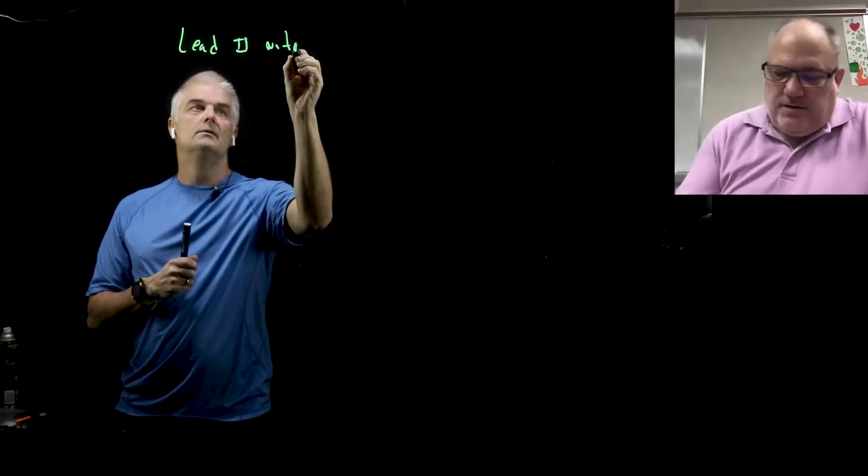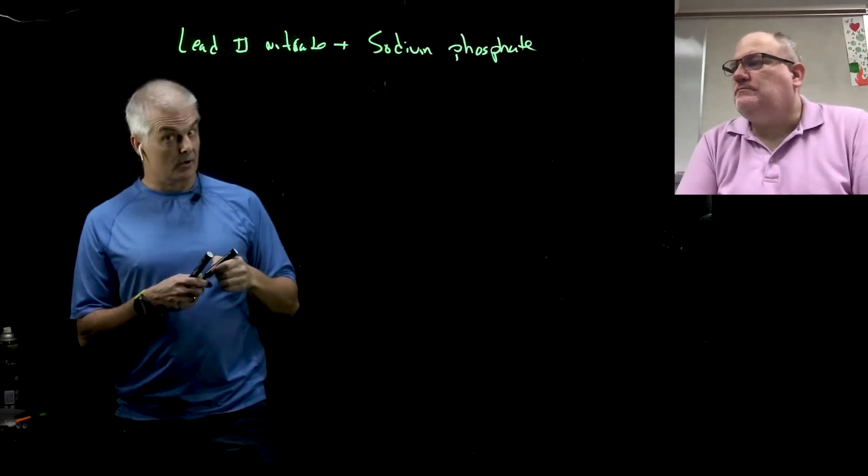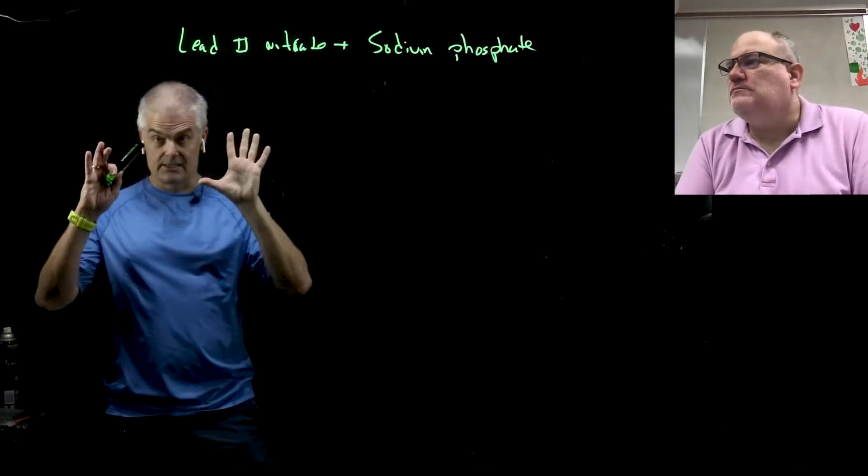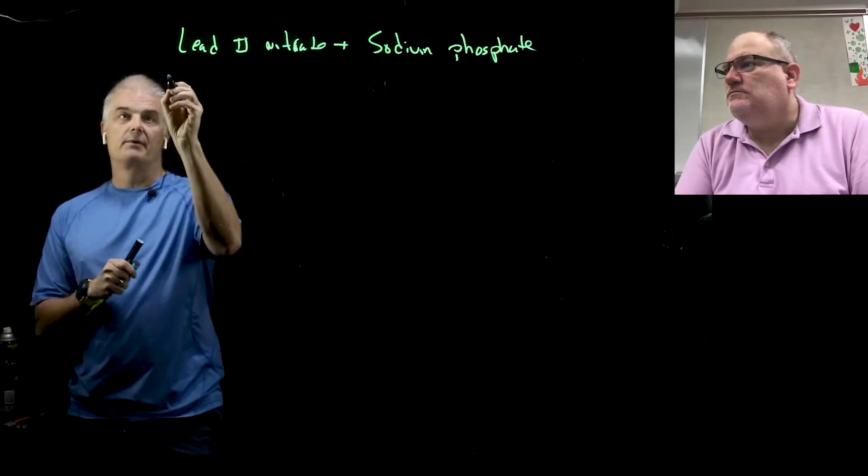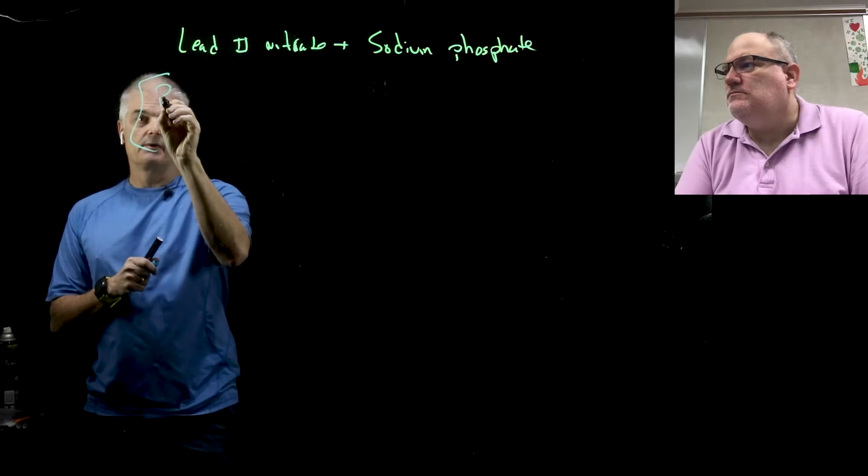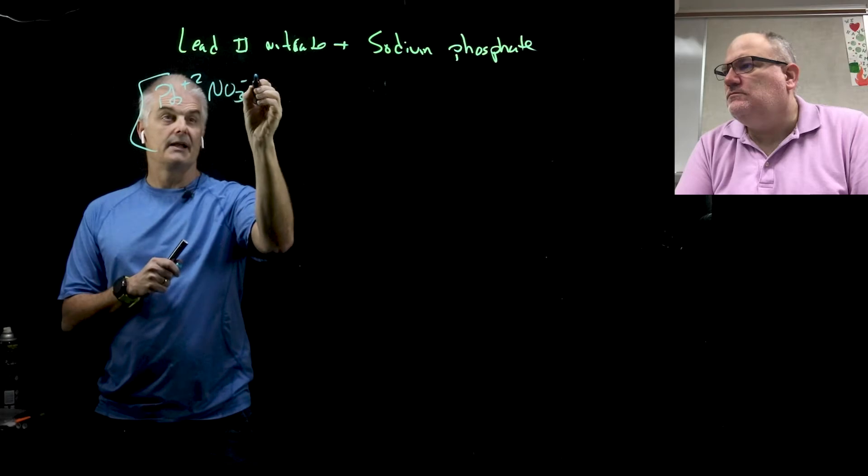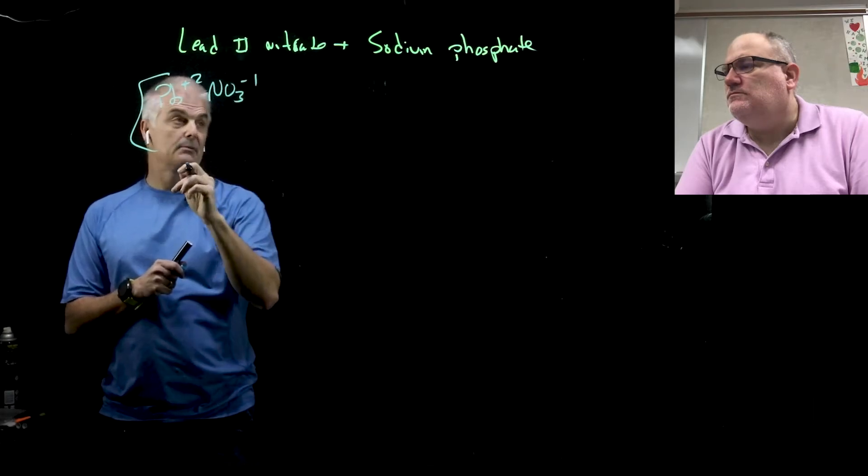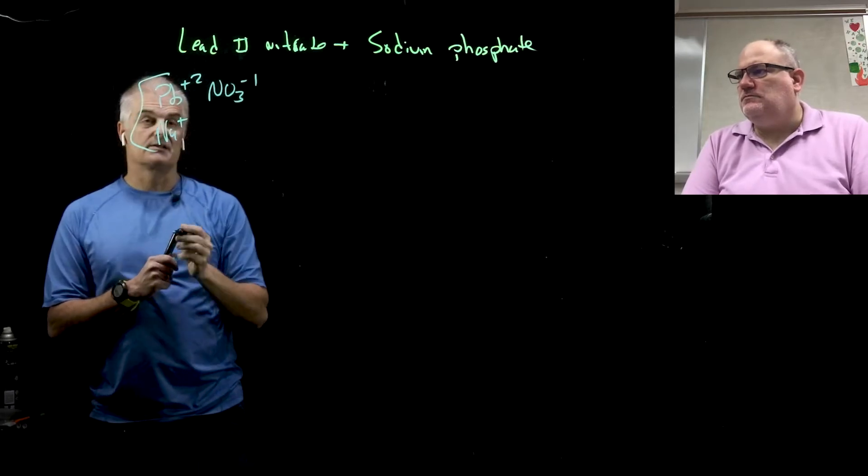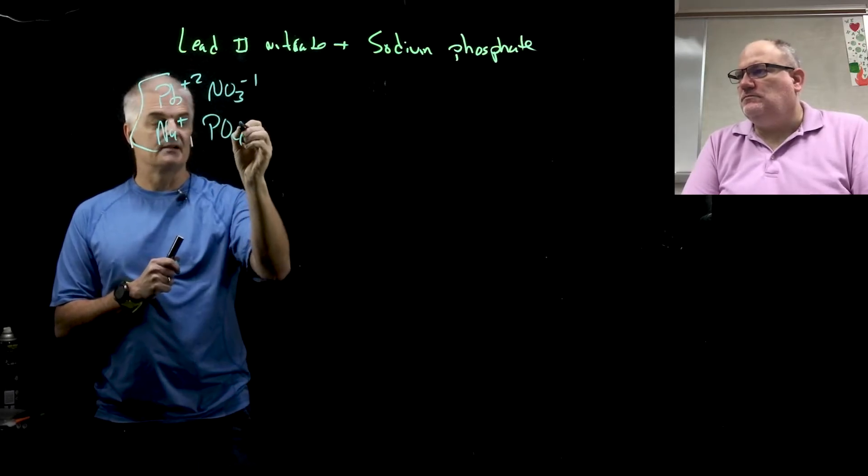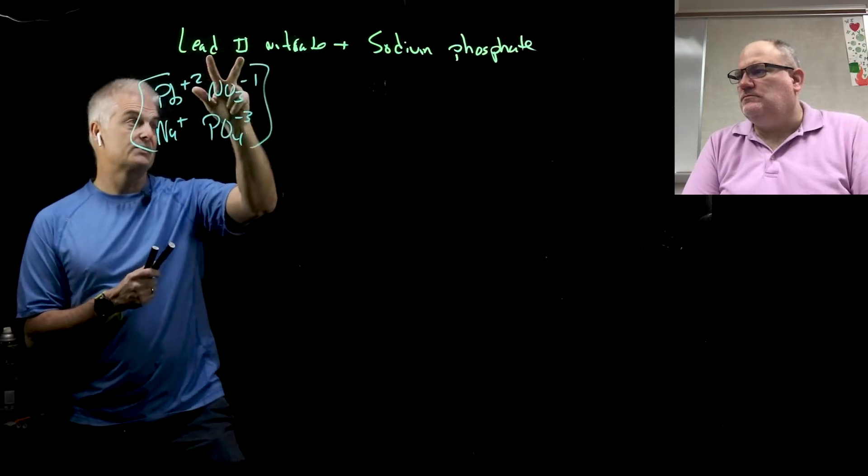What would be another example? Let's try lead(II) nitrate plus sodium phosphate. Now this is written in word form which is a little tricky. Let's make a scratch pad. Lead is Pb, the roman numeral 2+, nitrate NO3-, sodium is from the periodic table column one, it charges positive 1, phosphate is one of those polyions from the polyion table, PO4 3-.